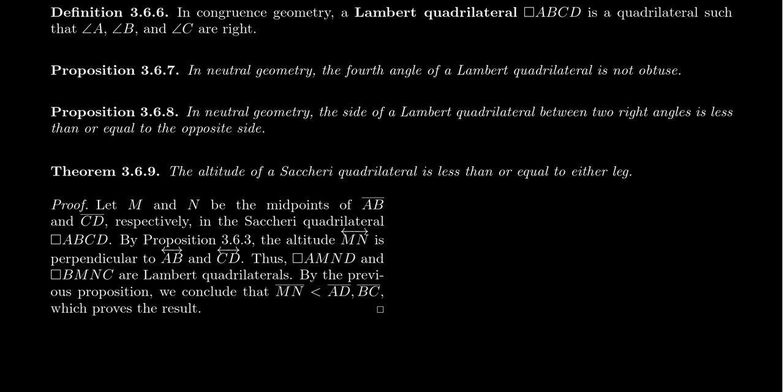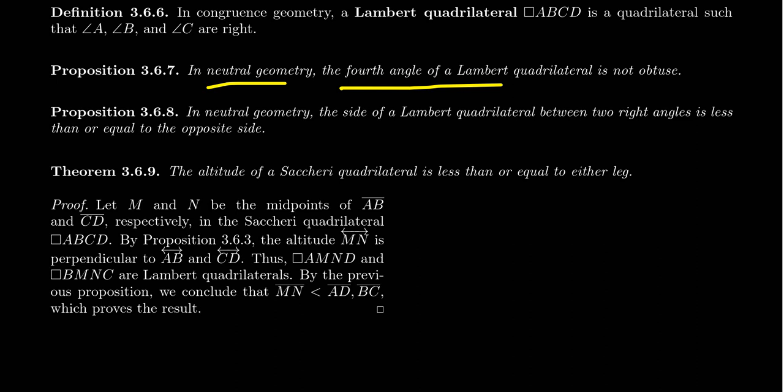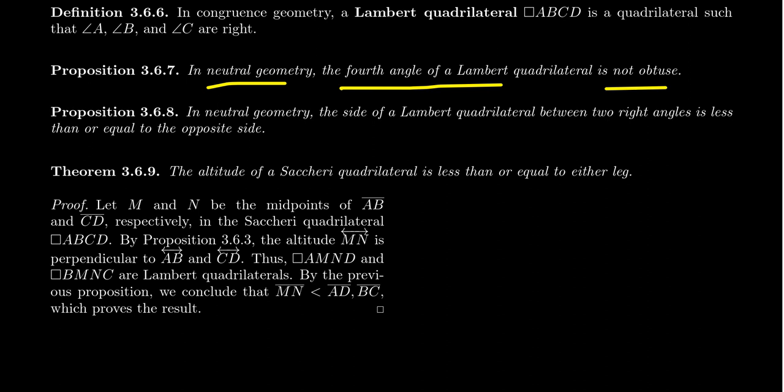The first proposition: in neutral geometry, the fourth angle of a Lambert quadrilateral cannot be obtuse. This is a consequence of the Saccheri-Legendre theorem. I'm going to leave it as an exercise to the viewer to prove that with a Lambert quadrilateral the fourth angle cannot be obtuse. In just a second, I'll show you a trick that reveals we've basically already proven it, because we proved the equivalent statement for Saccheri quadrilaterals, and transitioning to a Lambert quadrilateral makes the proof immediate.